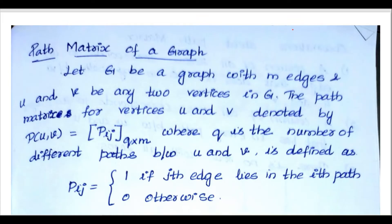Here we will discuss the definition with an example and also some observations. First we consider a graph. This is the path matrix of a graph and we will discuss the rank of the matrix. Let G be a graph with m edges and u and v be any two vertices in G.